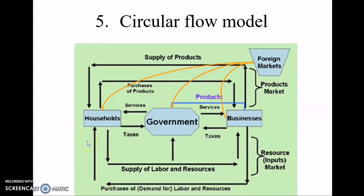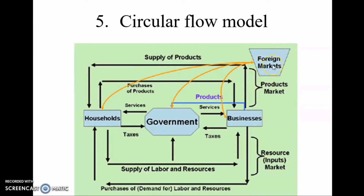Now let's look at the circular flow model. An economy consists of many groups that participate in various economic activities. This circular flow model shows the interactions between economic agents within an economy. In its simplest form we have interactions between households and businesses — sellers and buyers. But in a more realistic, big-picture view of most modern economies, this may also include the interactions between other economic agents such as governments, banks, and foreign markets.